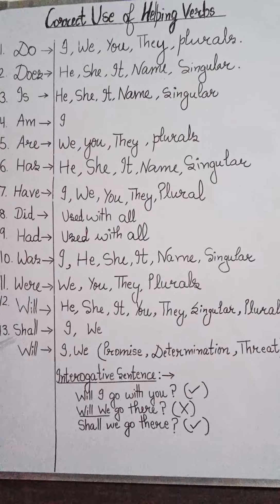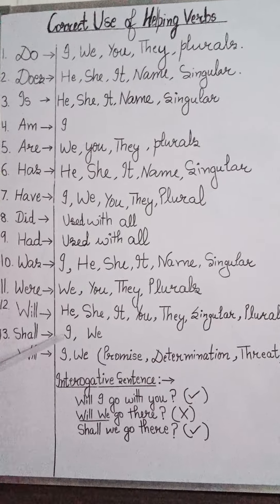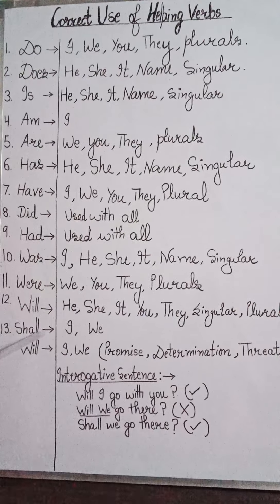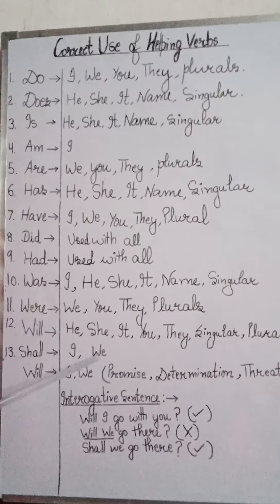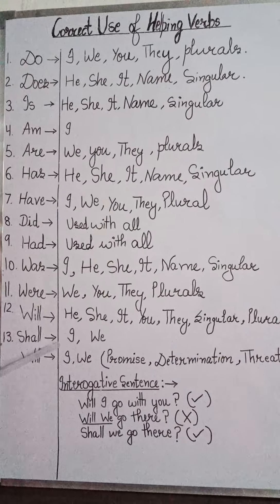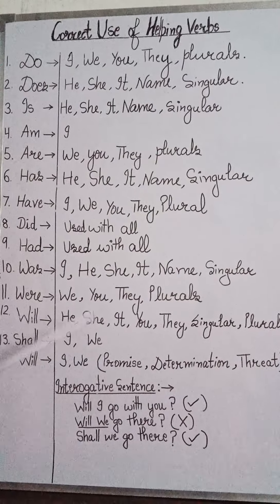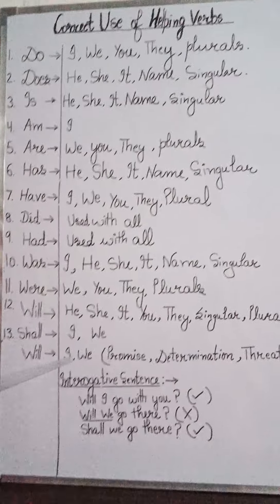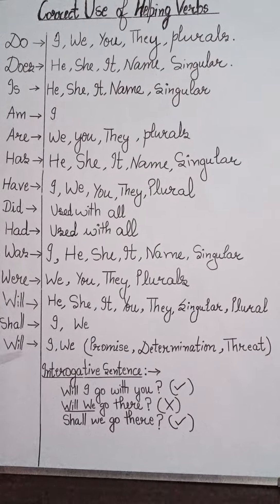'Shall' जो है 'I' और 'we' के साथ use होगा। जैसे 'I shall sing a song tomorrow' — मैं कल एक गाना गाऊंगा। 'We shall go to school tomorrow' — हम कल स्कूल जाएंगे। लेकिन आजकल बहुत से लोग 'I' और 'we' के साथ 'shall' की जगह 'will' का भी use करते हैं — books में 'shall' कम देखने को मिलता है।